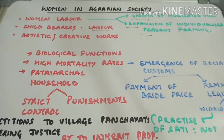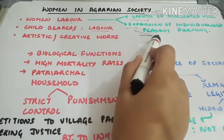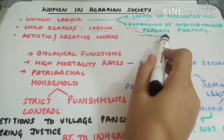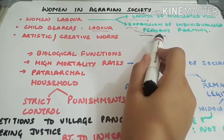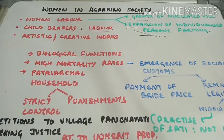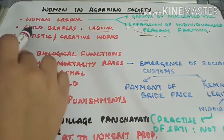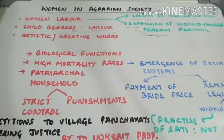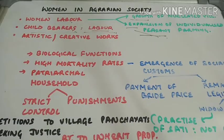Similarly, the expansion of individualized peasant farming meant that peasants who single-handedly worked in the fields required support, which was given by women. Women did all kinds of work — sowing, weeding, threshing, winnowing, harvesting, etc. Women were also the child bearers, which meant that more children meant more labor. So in a way, they provided for the labor force both directly as well as indirectly.